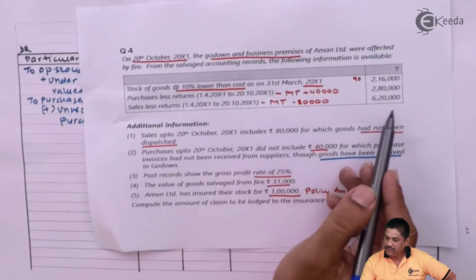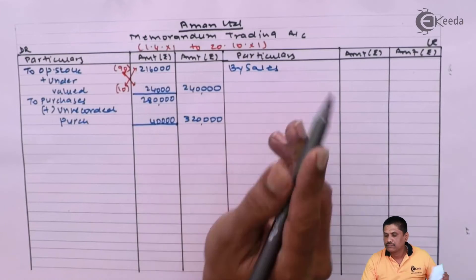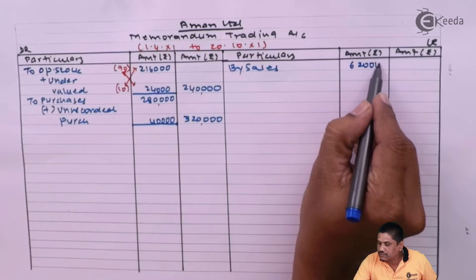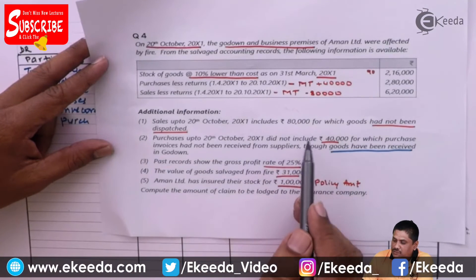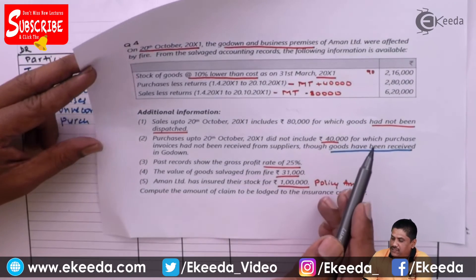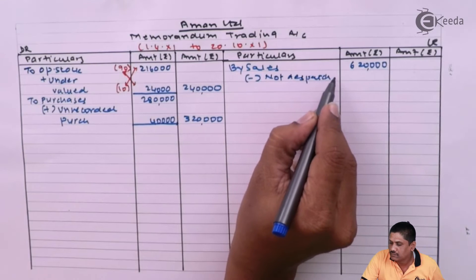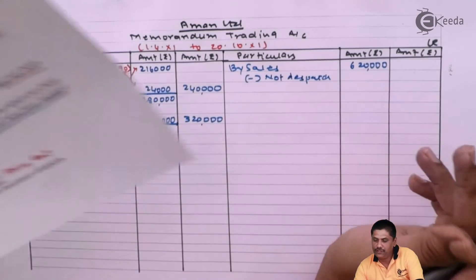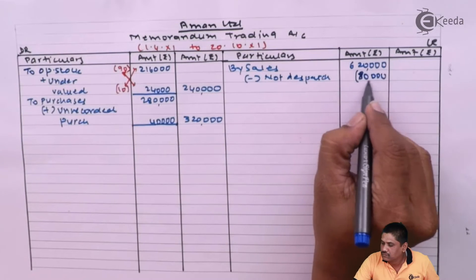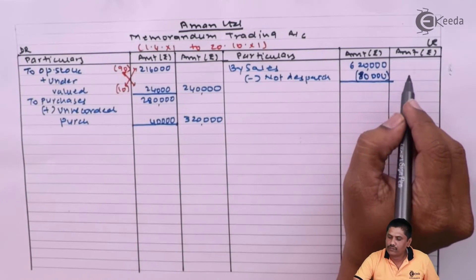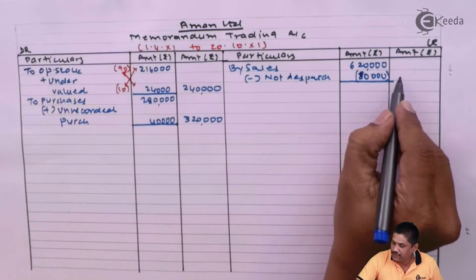Next, sales during the period are 6,20,000. But there is an adjustment: sales up to 20th October 200X1 include 80,000 for which goods had not been dispatched, so sales cannot be counted. I will minus 80,000 — amount not dispatched — giving net sales of 5,40,000.